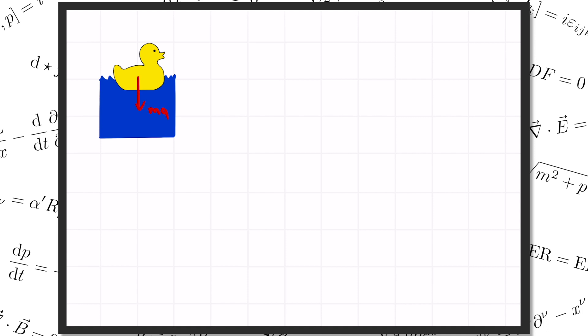The duck, of course, has some weight, mg, pulling it down. But since it's sitting at rest, there must be an opposite force from the water pushing up on it. That's what we call the buoyant force, F sub b. In equilibrium, the buoyant force has to equal the weight of the duck.